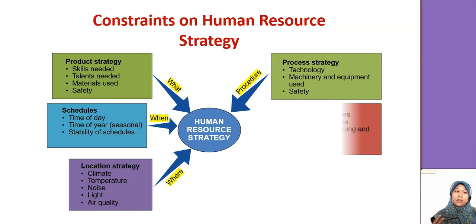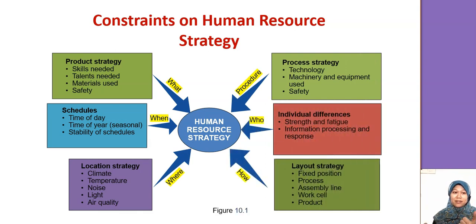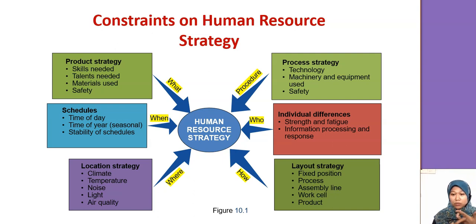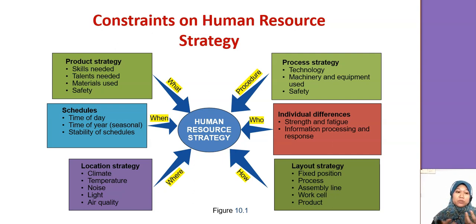These are the constraints normally faced by the organization. We start with the product strategy: what are the skills and talents needed to make the product? Then, safety — does the product-making process or service provider have a very good safety procedure for employees? Then scheduling: what time of day, how many people are needed to work this month or this year — they need to manage the scheduling of employees.